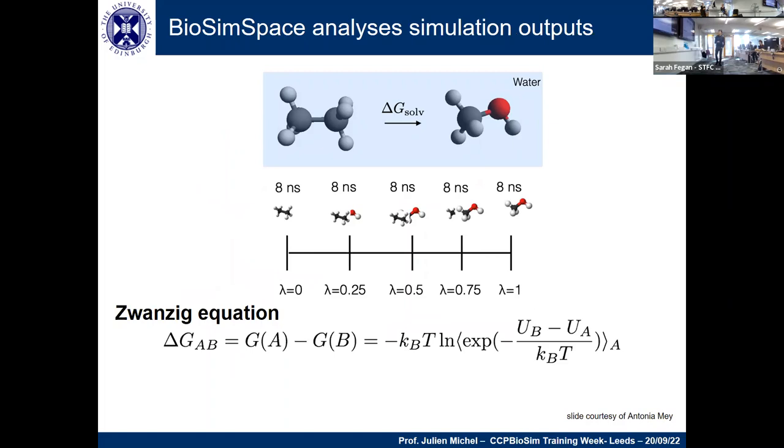In addition, BioSimSpace can analyze your output. What's shown here is a calculation where we're interconverting ethane, methanol and water. We've split lambda into several windows, five windows. What we do in equilibrium calculations is split lambda up into a number of values - the end states and some intermediate values. Then we run equilibrium simulation at each value of lambda. Here we run for eight nanoseconds in each. The windows have to be close enough together for our estimation of free energy to be accurate.